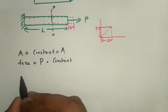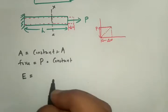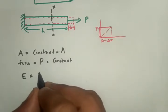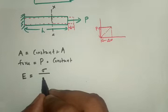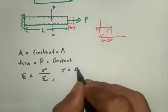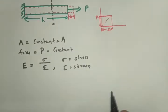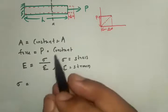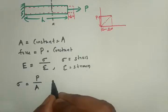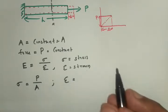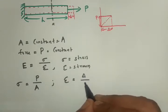Young's modulus E equals stress divided by strain. Stress sigma equals P divided by area A. Strain epsilon equals the deformation in the body divided by the original length, that is delta divided by L.